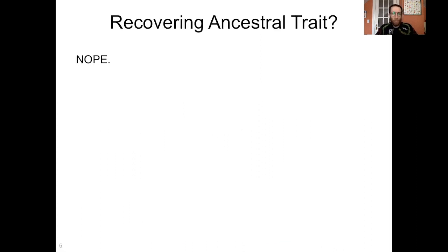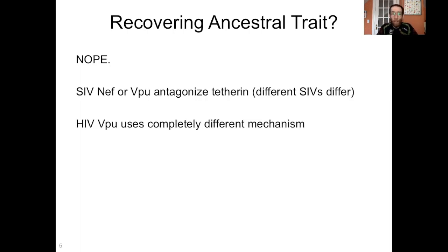Creationists sometimes claim that this is just an example of VPU recovering an ancestral trait — that other VPUs can antagonize tetherin, so this one's no different, just going backwards to that ancestral trait. But that's not the case. In the SIVs, a protein called NEF or the VPU protein antagonizes tetherin. Different SIVs differ in terms of the specific mechanism, but the important thing is that HIV VPU uses a completely different mechanism for tetherin antagonism compared to anything else that exists among the SIVs, and this is required because human tetherin is different from all of the other ape tetherins.